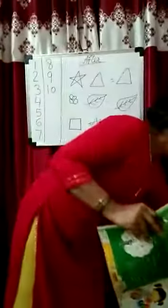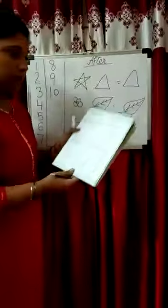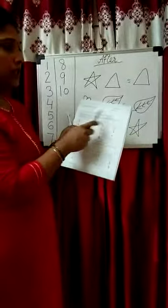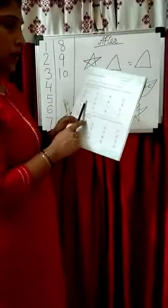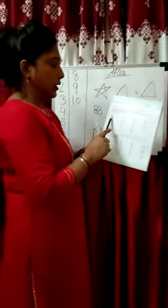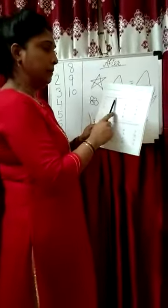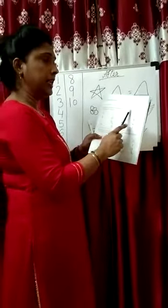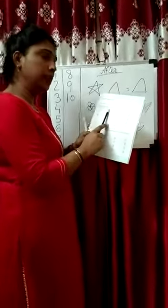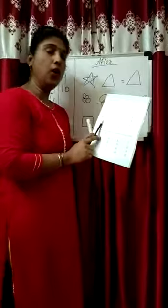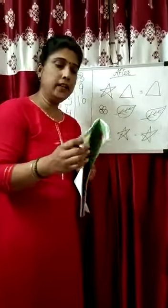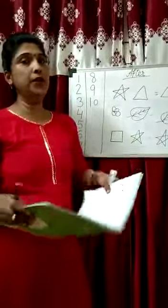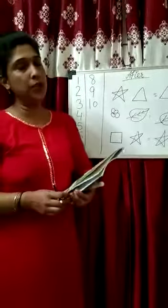Now, in your practice book, page number 25 — homework. Mention the date. Here are some boxes with given numbers. Read the numbers and write the numbers that come after the given numbers. This is your homework today. I hope you can understand after numbers and revise your homework at home.